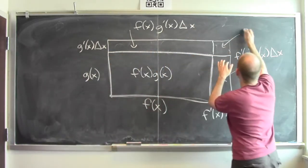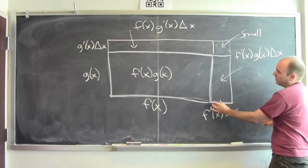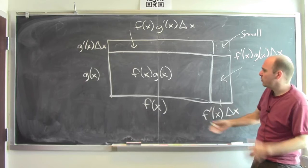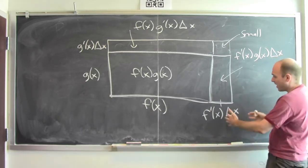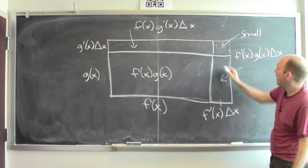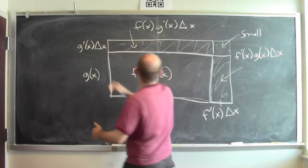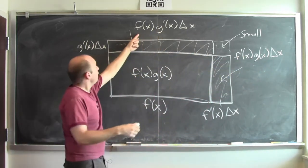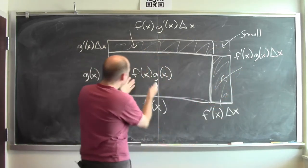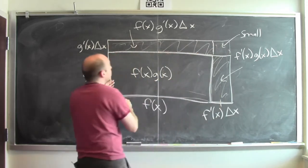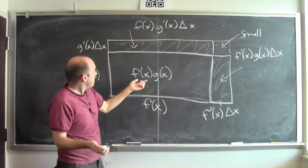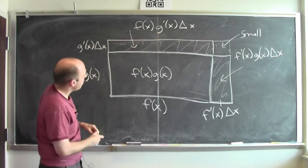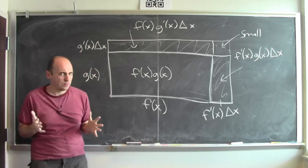There's also a small corner piece, but if delta x is really small, this piece is quite small. So how much does f of x times g of x change? It's mostly just the two pieces: f prime of x times g of x times delta x, plus f of x times g prime of x times delta x. The change in f of x times g of x is exactly what the product rule tells you — the derivative of f times g, plus f times the derivative of g. This picture gives compelling motivation for why the product rule is what it is.